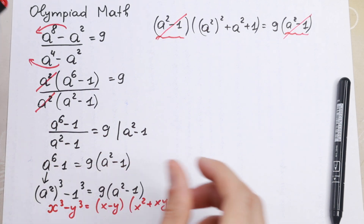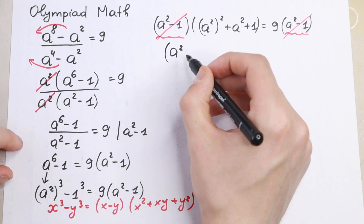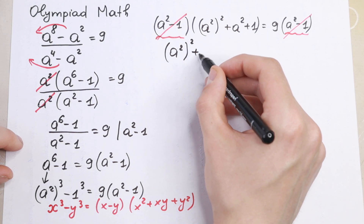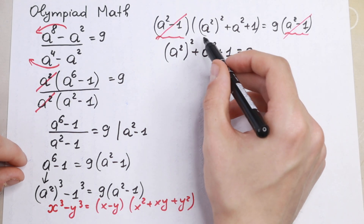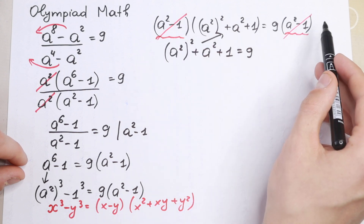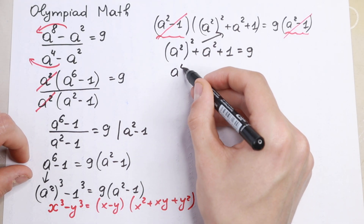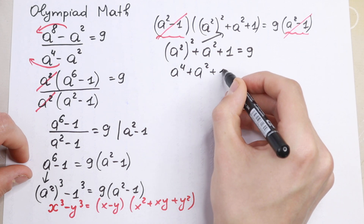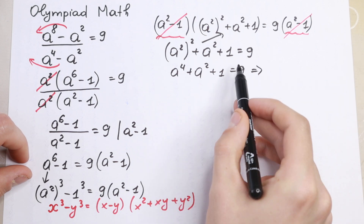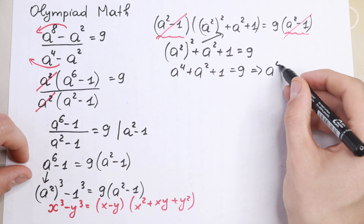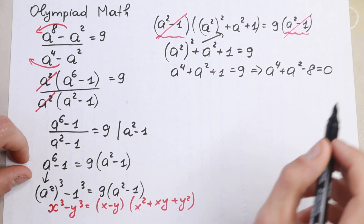As a result, after canceling (a² - 1) from both sides, we are left with a⁴ + a² + 1 = 9. Simplifying by moving nine to the left side, our final equation becomes a⁴ + a² - 8 = 0.